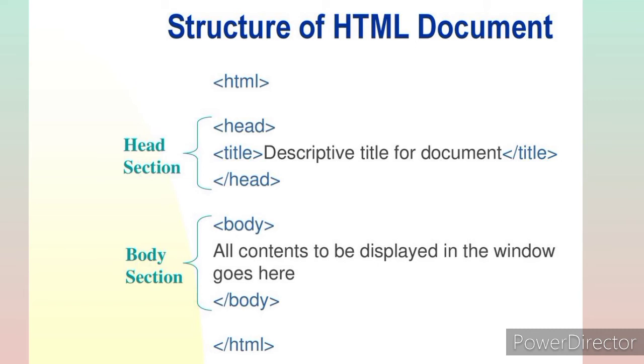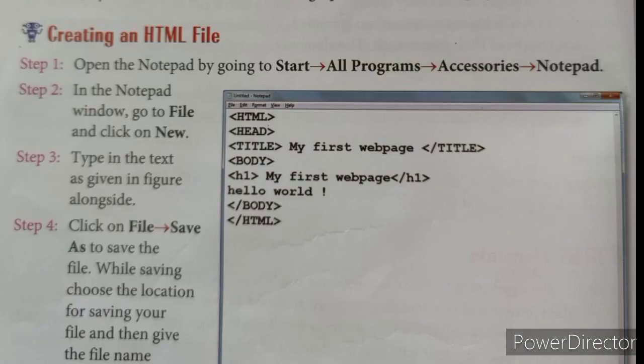Now let's see how we can create a web page. Open Notepad — you know how to open Notepad. After opening, we will start writing angle brackets: HTML, the first tag. Then I am using head and title. In the title, I have given 'my first web page'. Then the body tag. Inside the body, we have used one tag: H1. H1 is your heading tag. There are six headings — we will discuss this later. Today we will only use H1.